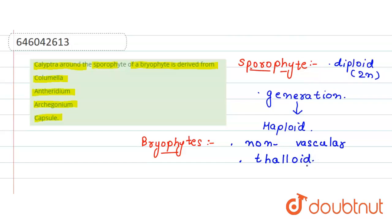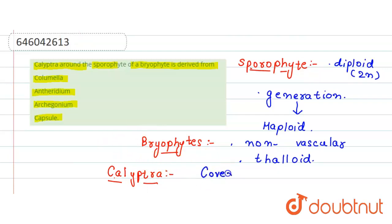Now let's talk about calyptra. Calyptra is a covering which is present in the sporophytes. The question is asking from where the calyptra will develop — from where it is derived.